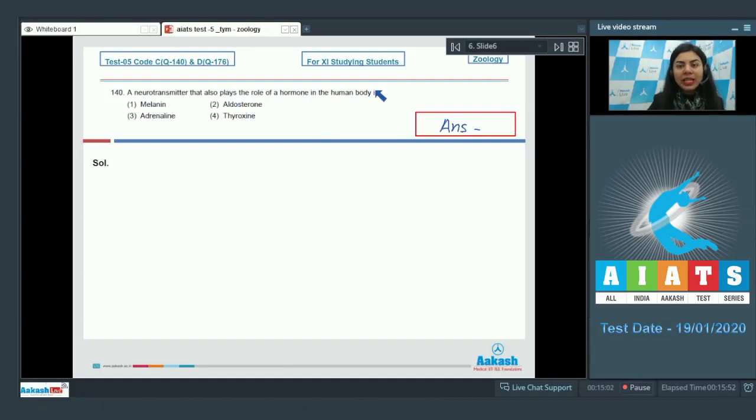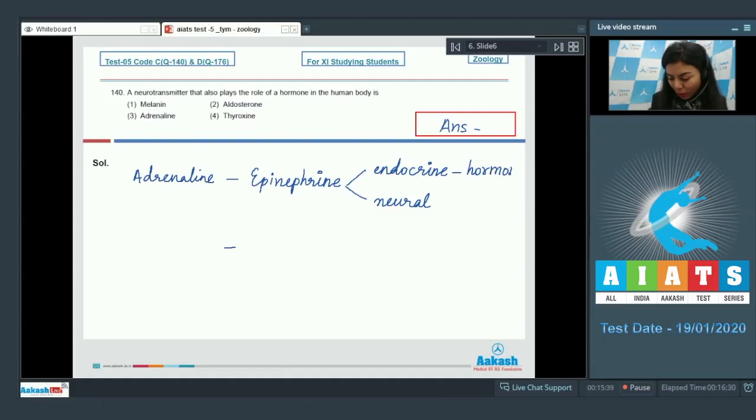Out of the given options, adrenaline is also called as epinephrine, and it's a neurotransmitter which is released at the ends of sympathetic nerve fibers. It has endocrine function as well as neural role. It means it works as a hormone and a neurotransmitter.